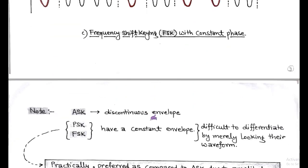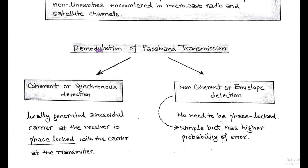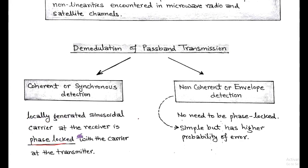After discussing the basic concepts of digital modulation techniques such as ASK, PSK, and FSK, we move to demodulation techniques. Two methods are used: first is coherent or synchronous detection, and the other is non-coherent or envelope detection. In coherent detection, a locally generated sinusoidal carrier is used at the receiver, and it must be phase-locked with the carrier at the transmitter. In non-coherent detection, there is no need for phase locking, making it a simpler method but having a higher probability of error.